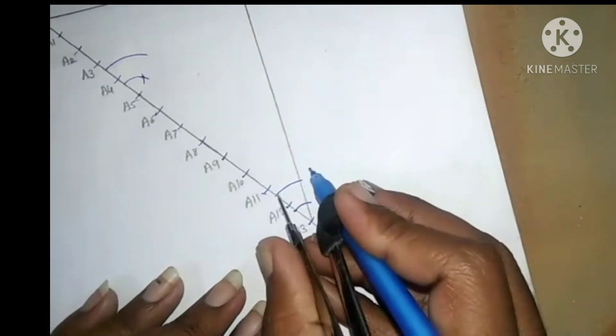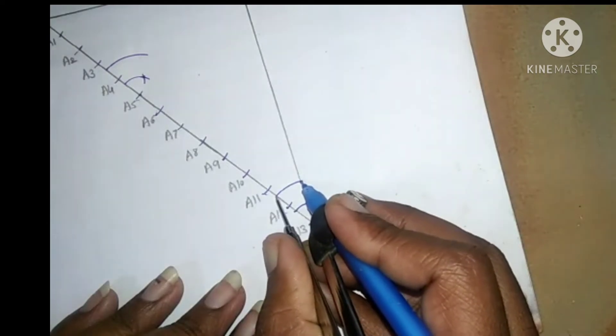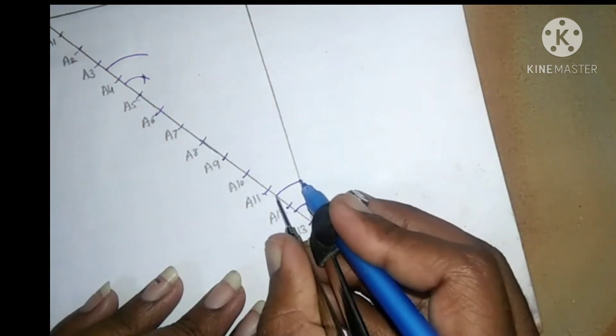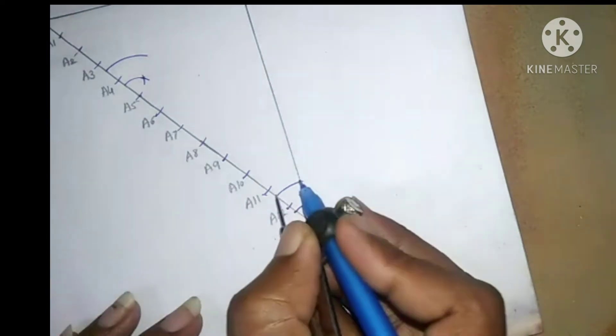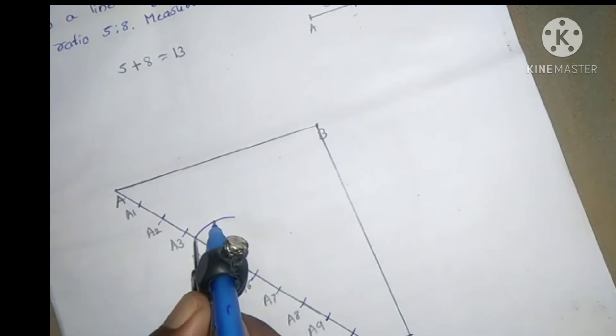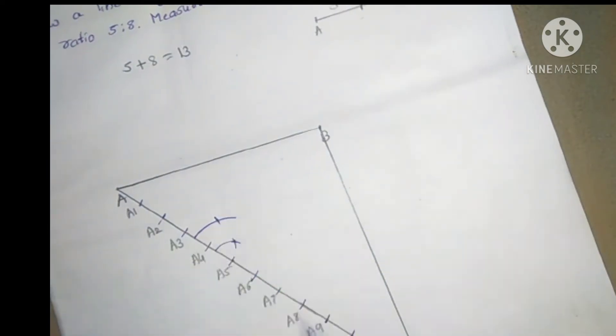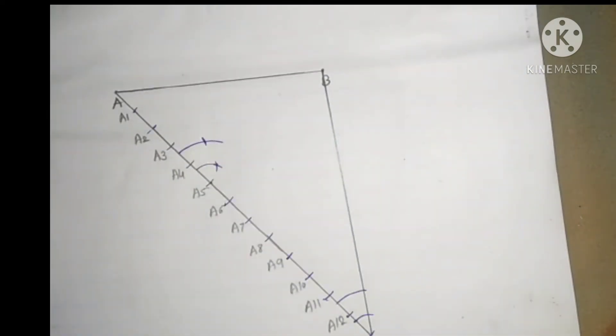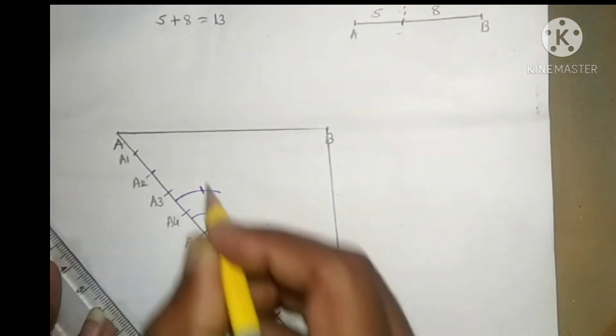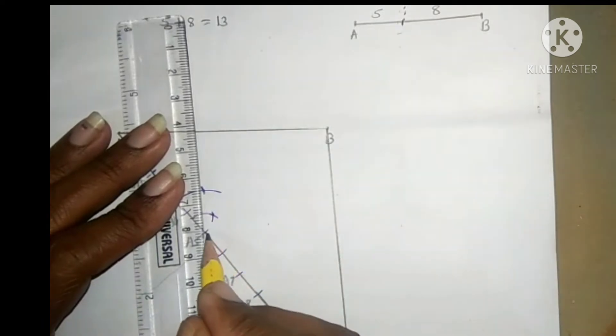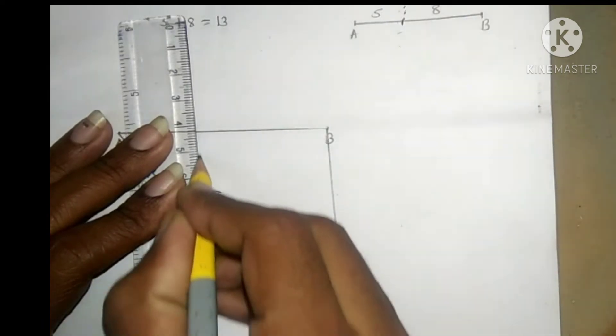Now take measurement of this arc. Using this measurement, draw an intersecting point on this arc. Join point A5 to this point and extend up to the line segment AB.